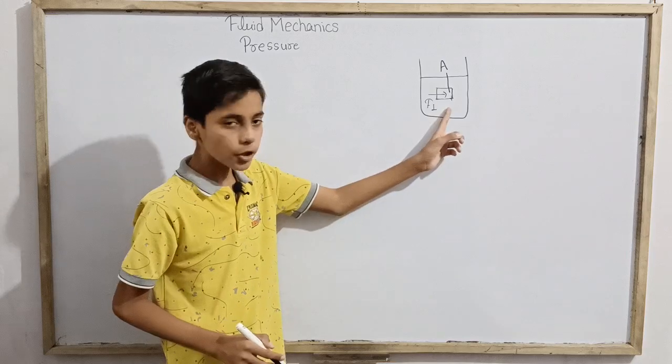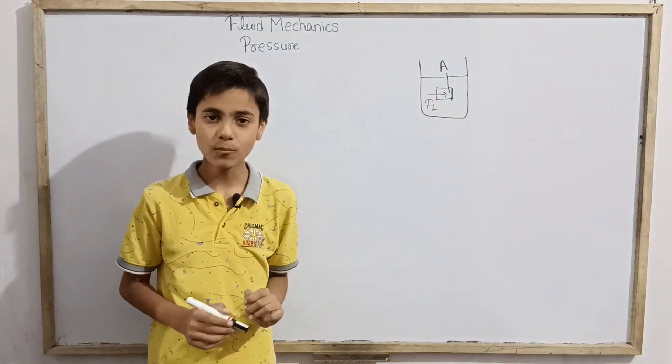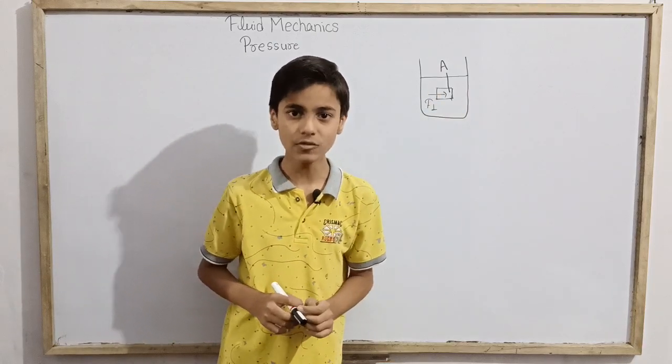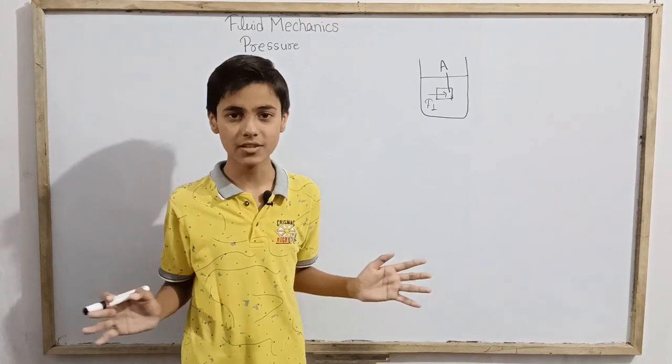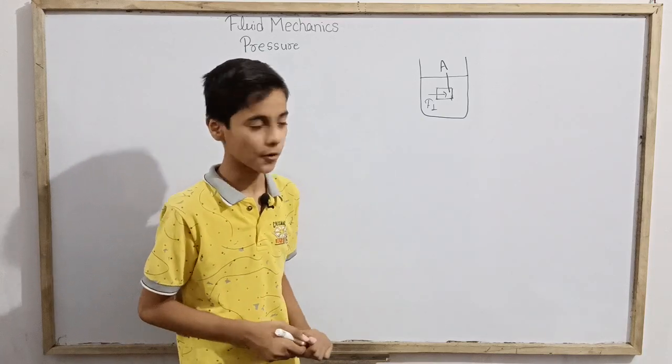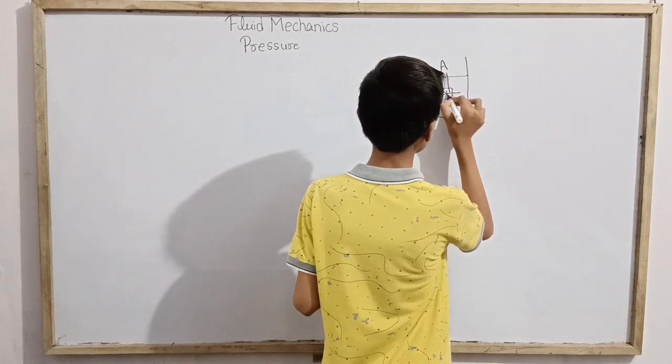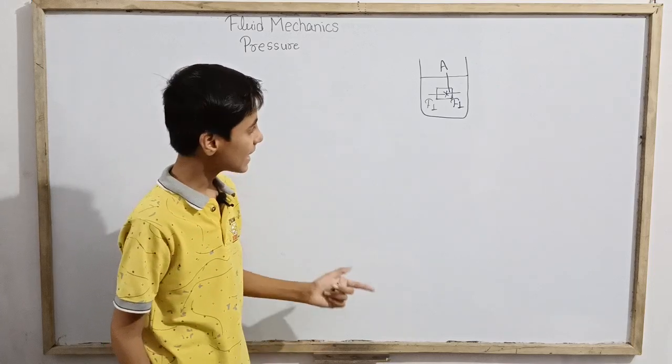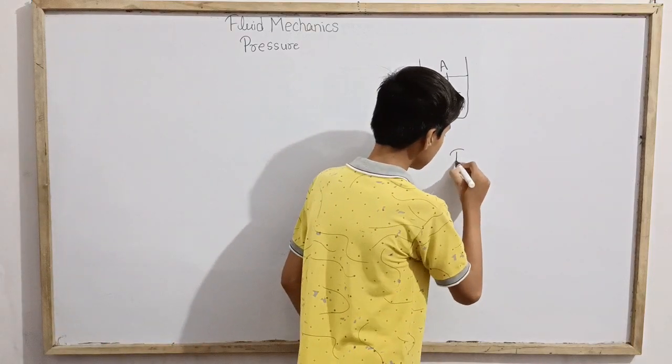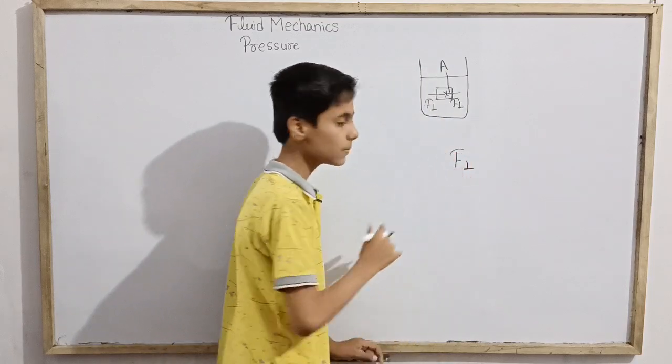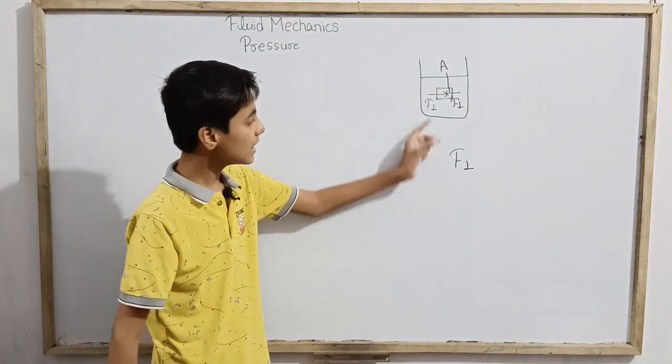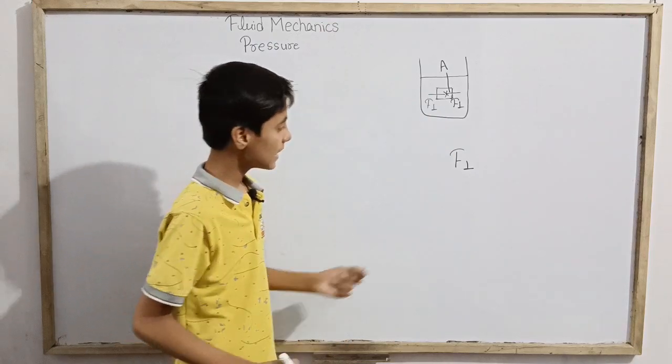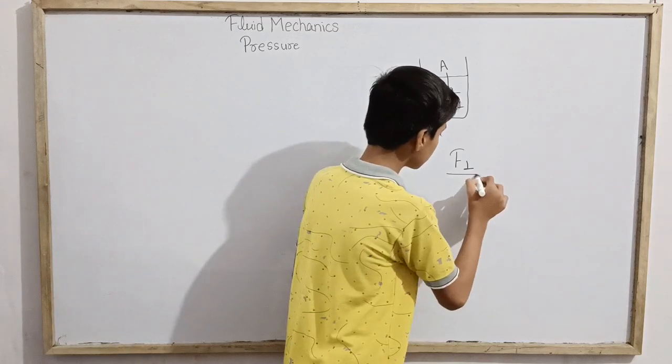Now for the fluid to be static and at rest, as well as the body, from both sides equal and opposite force exerts, otherwise the body will accelerate and the fluid is no longer static. So here also equal magnitude but in opposite direction, force F perpendicular exerts. If we have one side force F perpendicular, the net force is always zero if the fluid and the body is static.